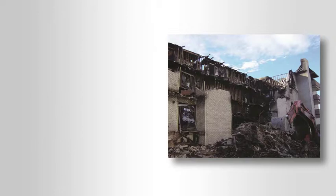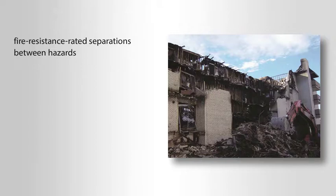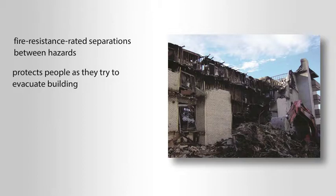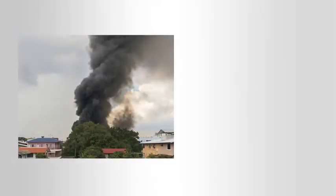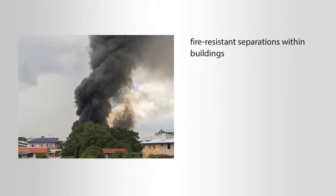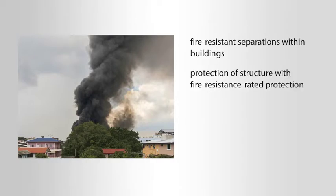The IBC provides protection from fire spread in a building by requiring specific fire resistance rated separations between hazards that may be located in the building. It also protects people as they try to evacuate a building in a fire situation. In addition to protecting occupants from fire, the IBC also provides protection for firefighters entering a building during a fire event. The IBC requires fire resistant separations within buildings and protection of the structure with fire resistance rated protection. The separations differ in the level of protection and continuity.